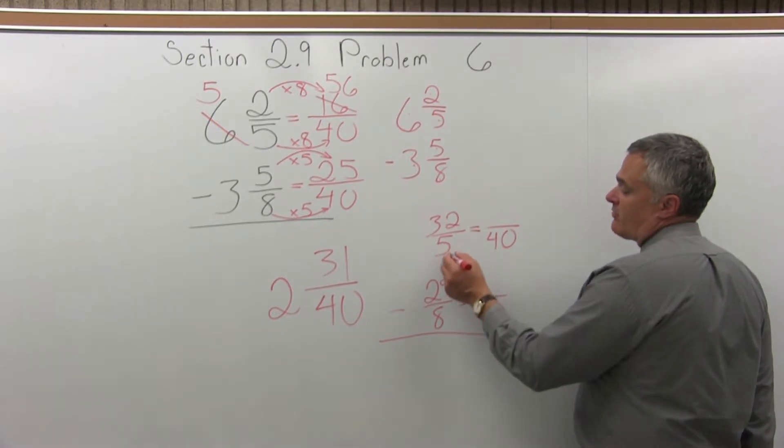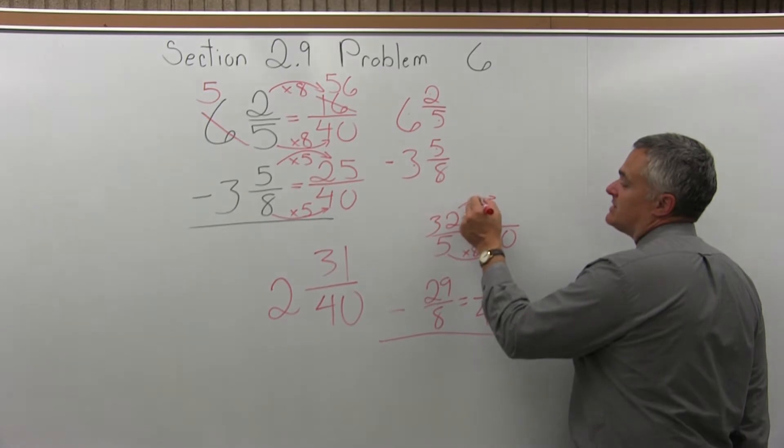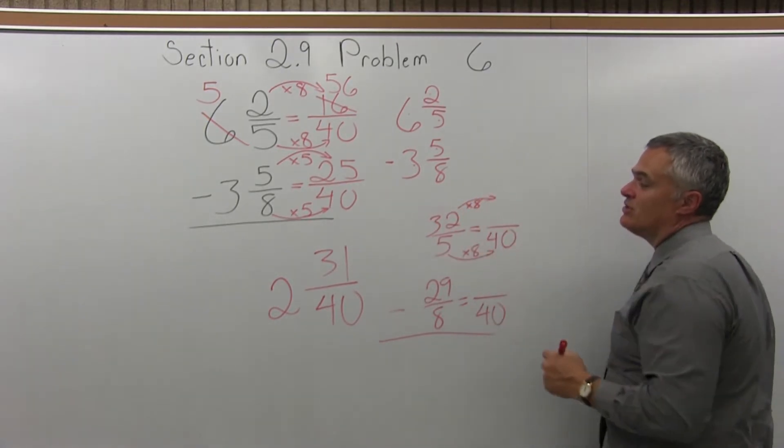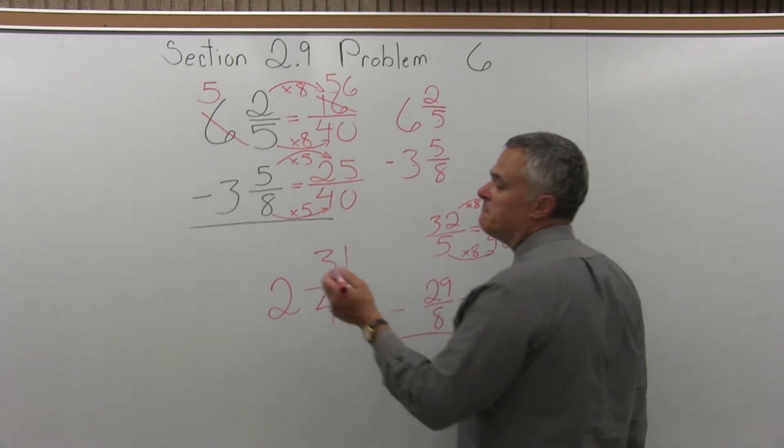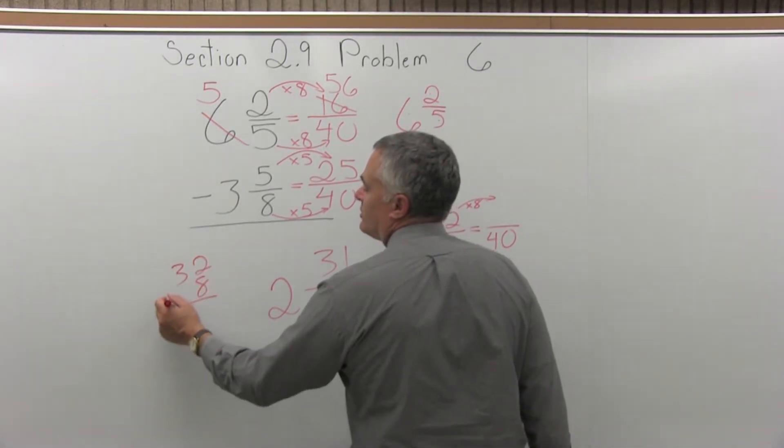For the top fraction, 5 times something was 40, it's still 5 times 8. So the top is also times 8. It's a little tougher to do 32 times 8. You might not be able to do it in your head. If you can't, just come off to the side. 32 times 8, 8 times 2 is 16.